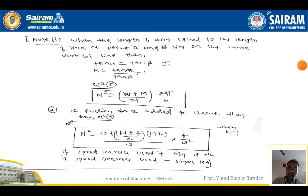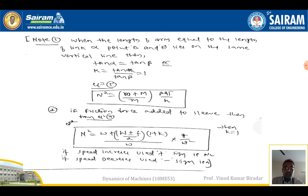In conclusion, two important notes for solving problems: Note 1 — when the length of the upper arm equals the length of the lower link and points B and E lie on the same vertical line, then tanα = tanβ, so k = tanα/tanβ = 1. The equation simplifies to: N² = [(m + M) / m] · (895/h).